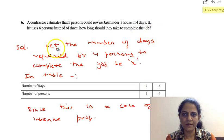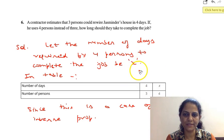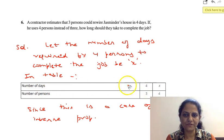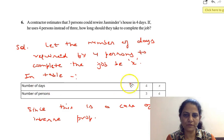Now, let us assume that the number of days required by 4 persons to complete the job be x. So, in the tabular form, we can write: number of days are 4, number of persons are 3. If we have assumed number of days are x, then number of persons are 4.